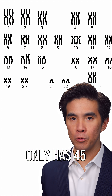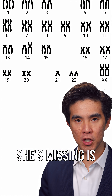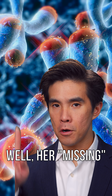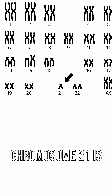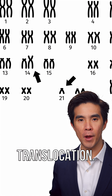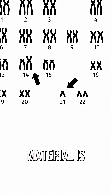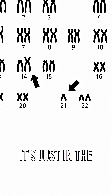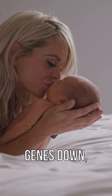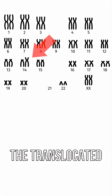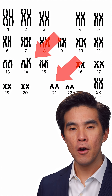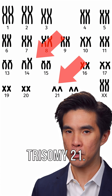Sometimes a mom only has 45 chromosomes, and the one she's missing is chromosome 21 — but she's totally healthy and fine. How does that happen? Well, her missing chromosome 21 is still there; it's just attached to chromosome 14. This is called a translocation. The genetic material is fully intact, just in the wrong place, but it still works. But when mom wants to pass her genes down, baby might get the translocated chromosome plus the normal 2 copies of 21, functionally having trisomy 21.